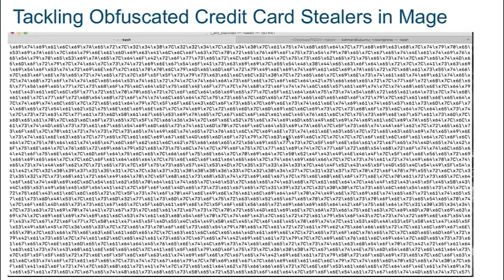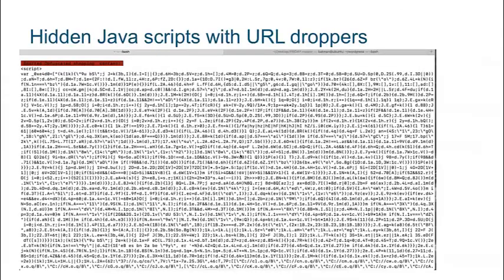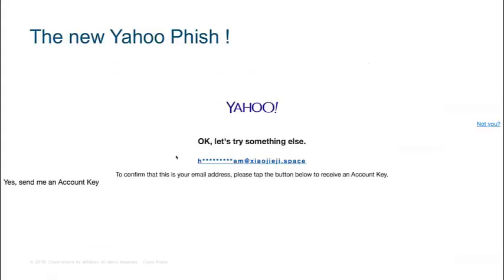We also tackle obfuscated credit card stealers in Magento — an application where you can quickly spin up a shopping cart site. We have internal classifiers and intelligence to catch obfuscated credit card stealing scripts. This has been big news for the last two and a half years, and we've been stopping it. It will keep growing because e-commerce is booming. What happens is: a legitimate site gets compromised, no malware is inserted — instead, obfuscated scripts are placed to steal credit card details from the checkout, exploiting unpatched Magento vulnerabilities.